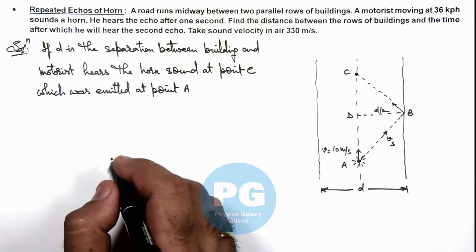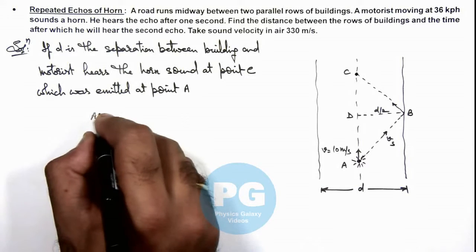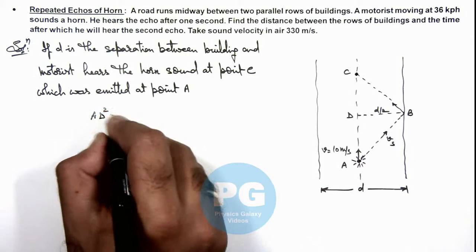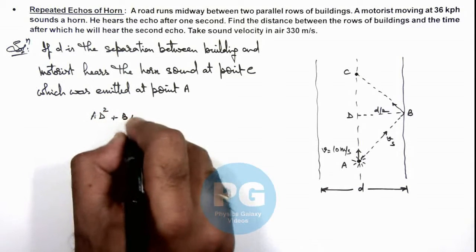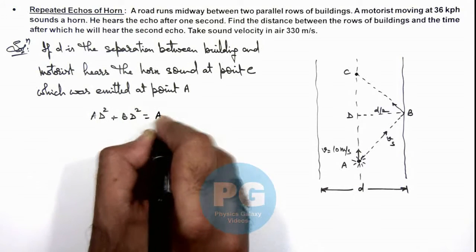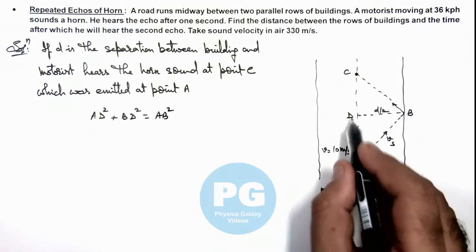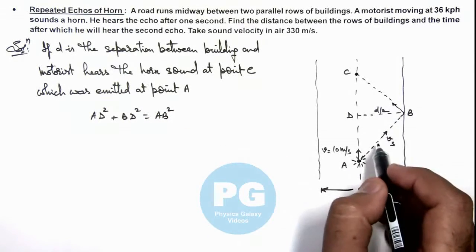Then here we can write AD² plus BD² must be equal to AB², and applying Pythagorean law in this triangle.